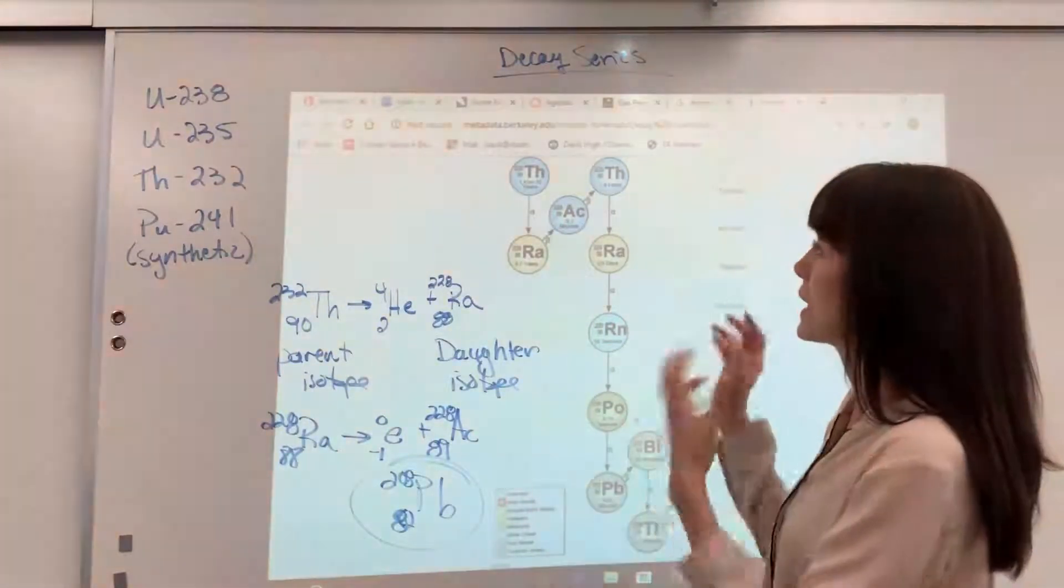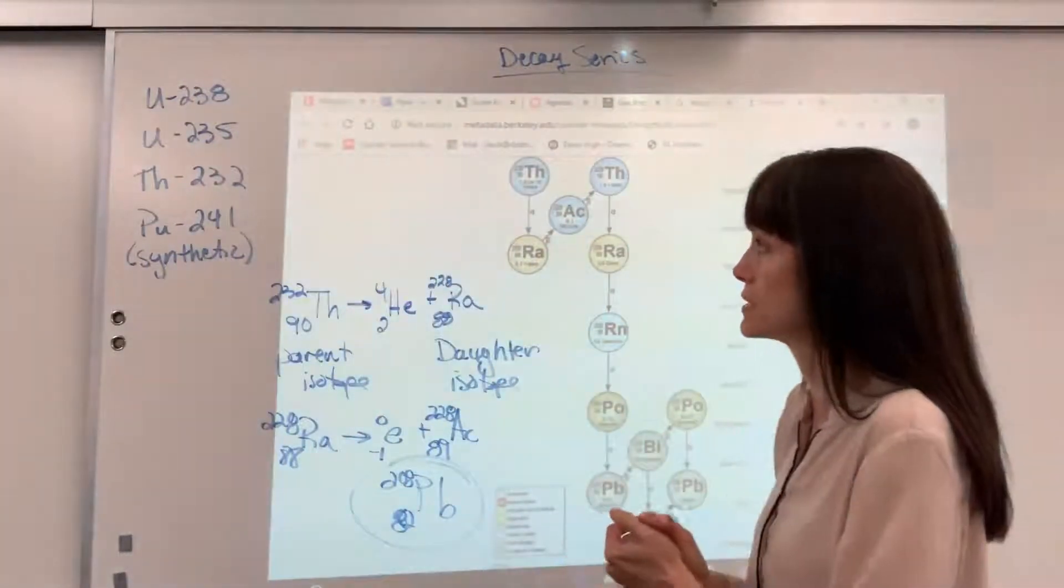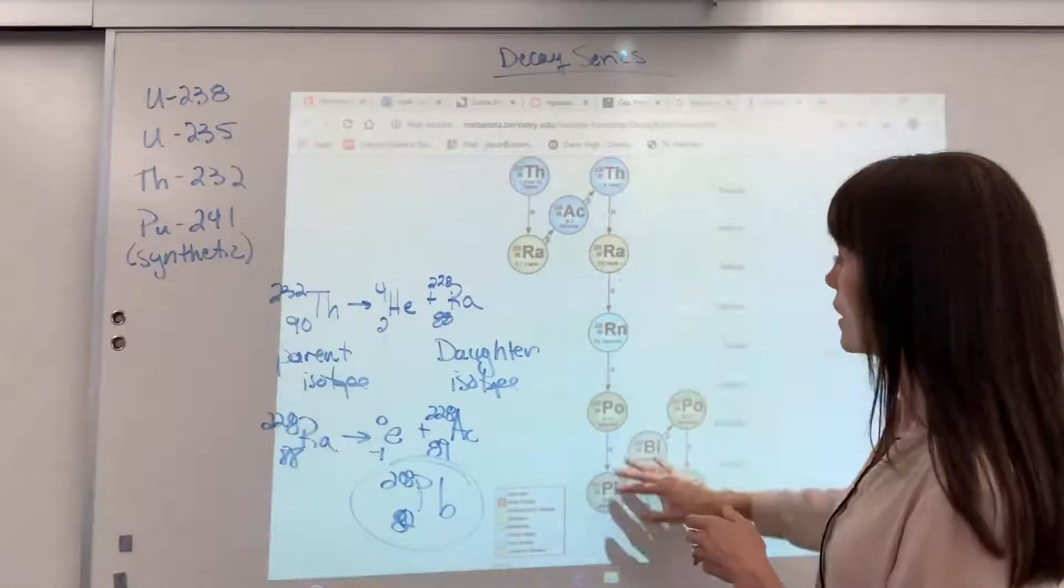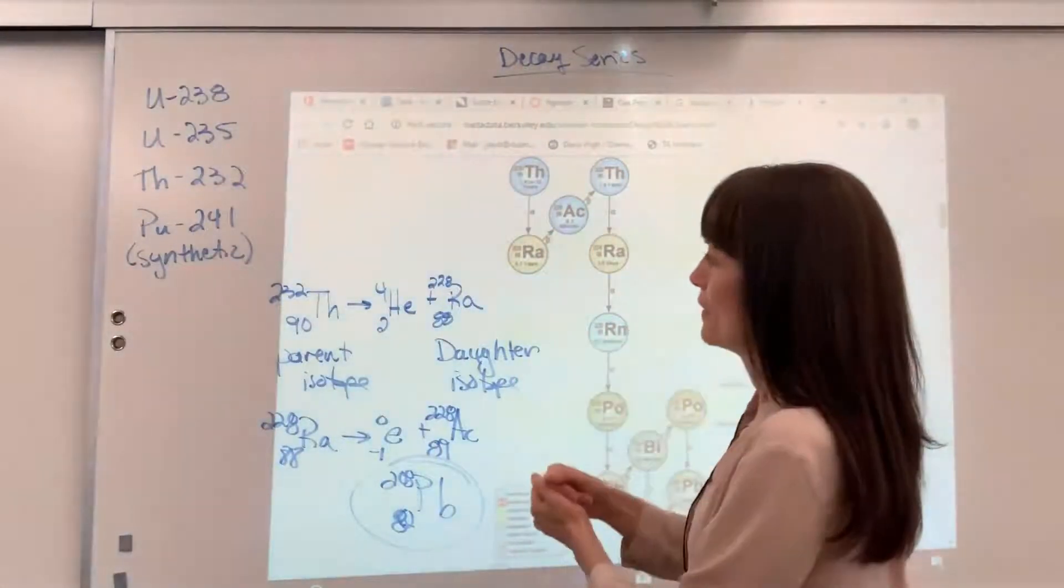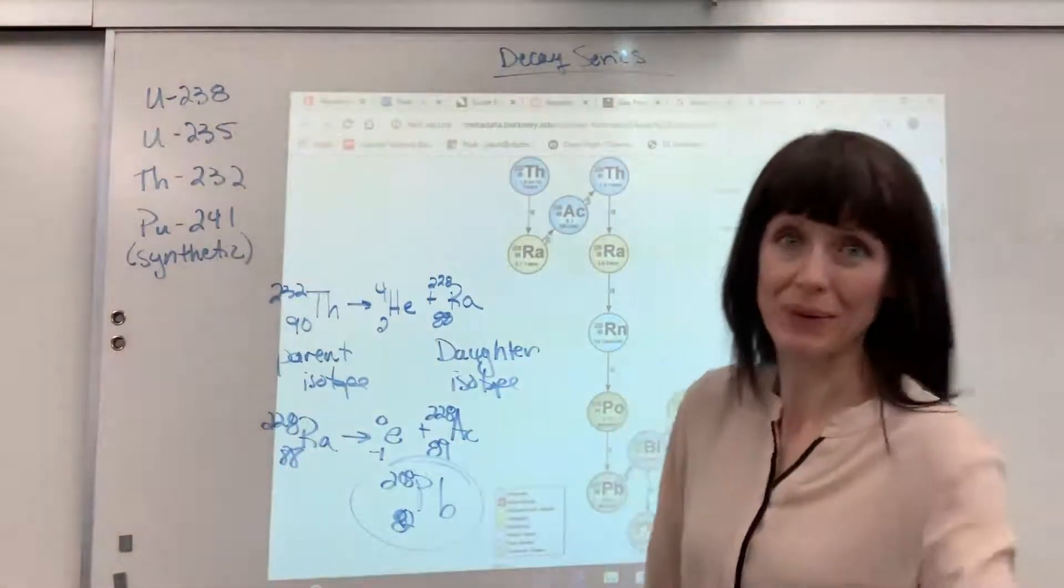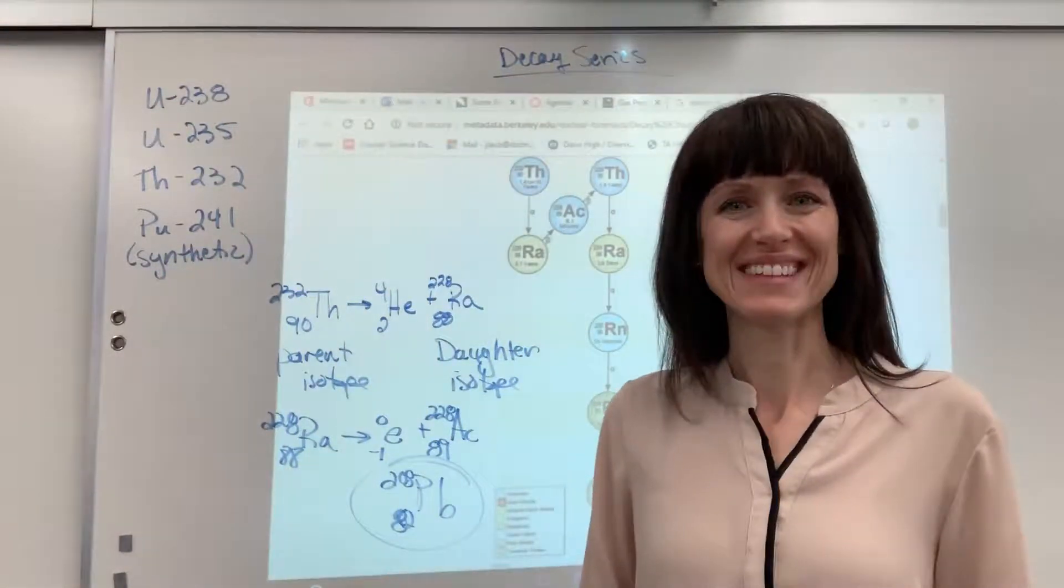So there you have it, decay series. We have four special decay series, three naturally occurring, one synthetic, and now you know how to read, write, translate, create the parent isotope, daughter isotope with nuclear equations. Pretty cool. Good job. Have a great day. Thanks.